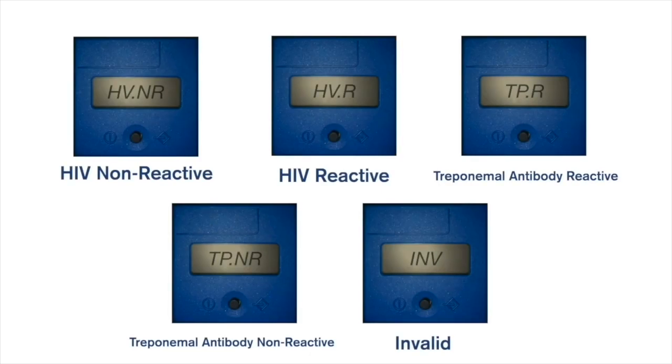HV.NR for HIV nonreactive. HV.R for HIV reactive. TP.R for treponemal antibody reactive. TP.NR for treponemal antibody nonreactive. INV for invalid.